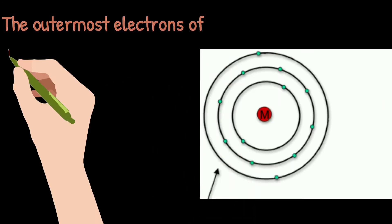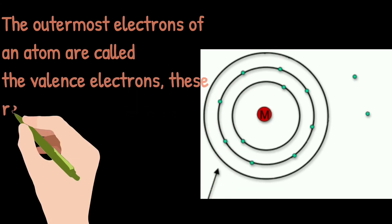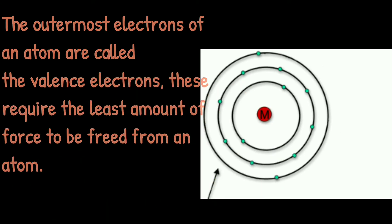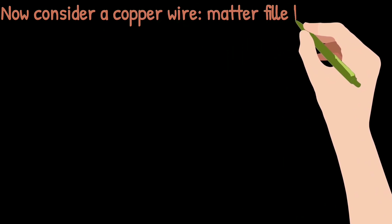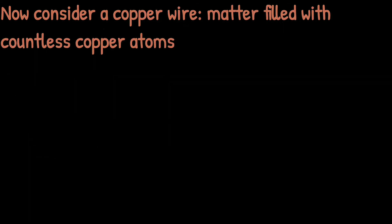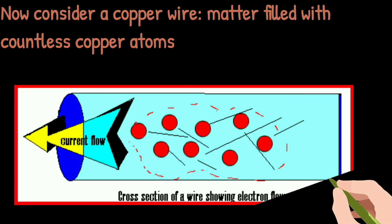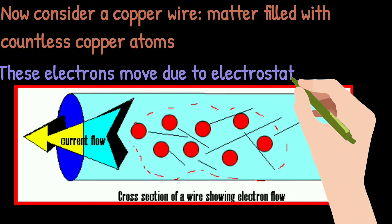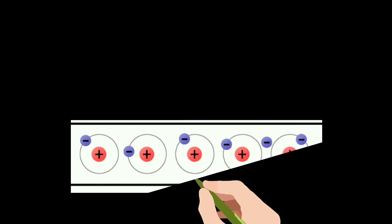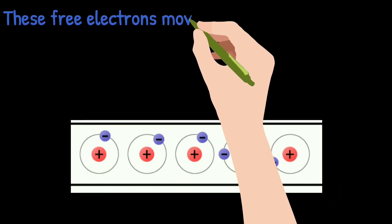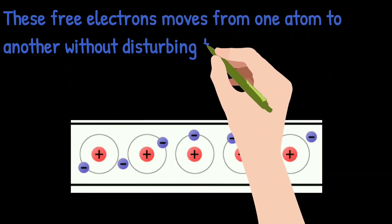Now consider a copper wire, matter filled with countless copper atoms. The free electrons of this atom move in random motion or haphazard motion. This electron moves due to electrostatic force, that is, electrons repel each other. These free electrons move from one atom to another without disturbing their stability. This movement of electron is called drift movement.